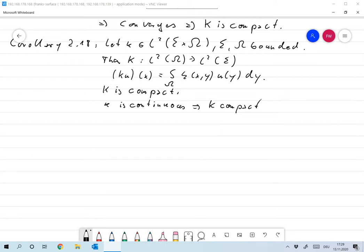And you do that by approximating K and approximating the operator capital K with a sequence of compact operators and then the limit is also compact.